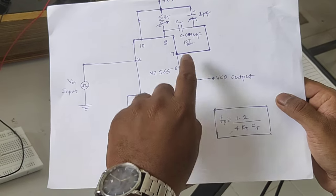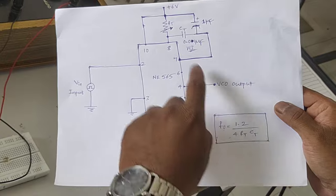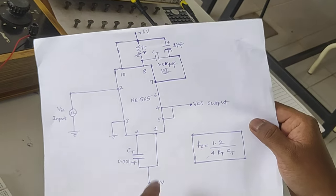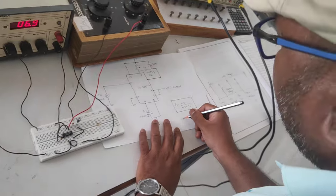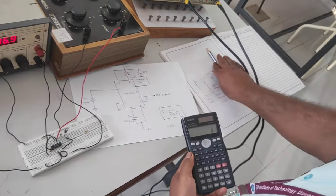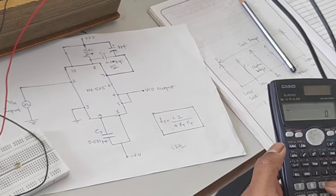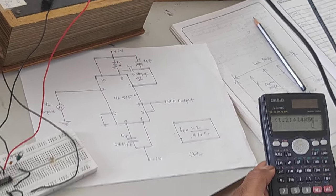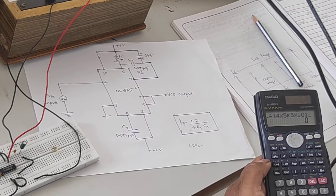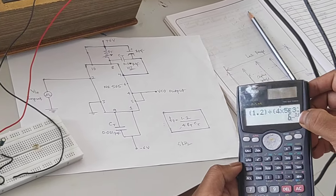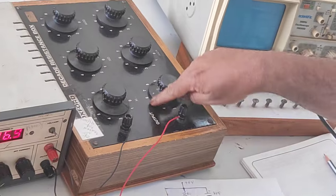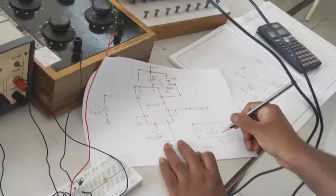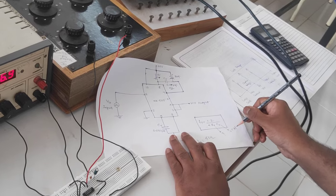So here what we have taken is C we have taken 103 that is 0.01 microfarad. R value you have to find out and keep it in DRB. F0 you can take as a design, in our case we have taken as 5 kilohertz. If F0 is 5 kilohertz, F0 is 1.2 divided by 4 into F0 is 5k and CT 0.01 microfarad. So what is the value of R you are getting here? 6 kilo ohms, that is what I have adjusted here.